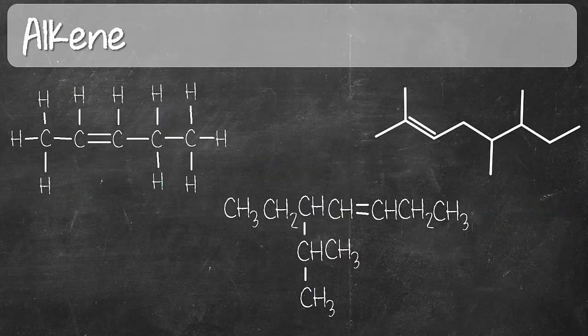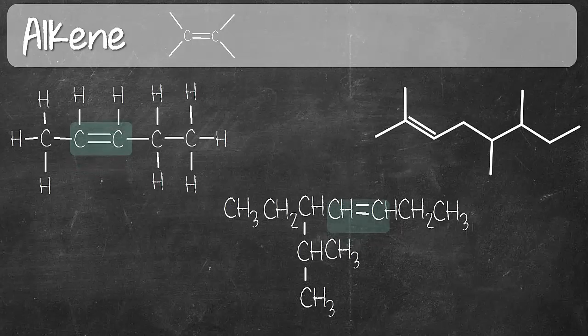Moving on to alkene. The functional groups of alkene consists of a CC double bond. So there must be at least one double bond present in the structure for you to call it an alkene. So let's look at the first structure. There is a CC double bond here. The second structure right here. And the third structure right there. So these are all representative structures of alkene.